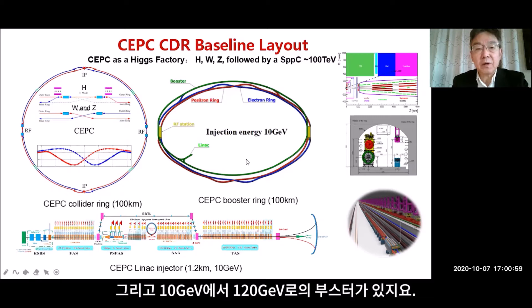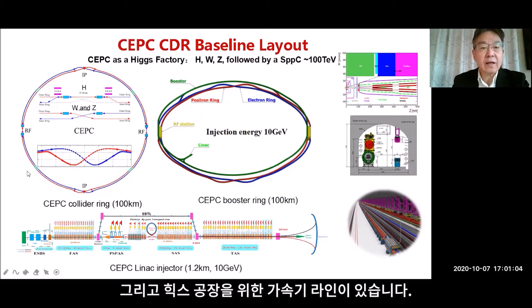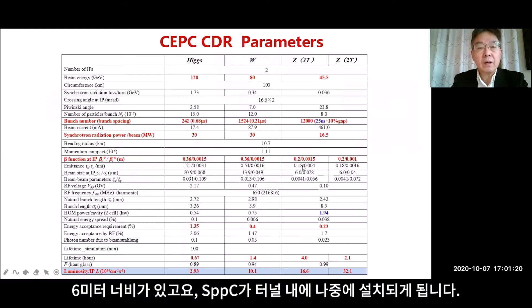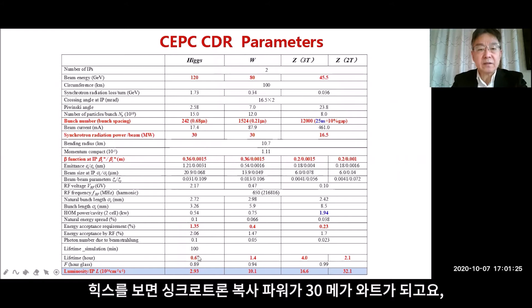The injector runs at 10 GeV, with a booster from 10 GeV to 120 GeV, and then the collider ring for the Higgs factory. You can see the tunnel on the right — six meters wide — and the SPPC will be installed in the same tunnel later.